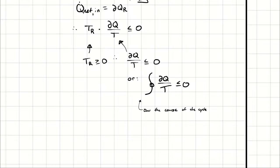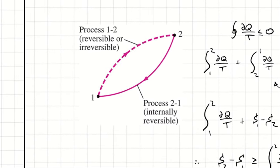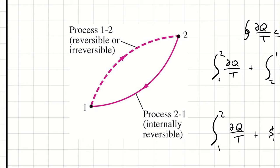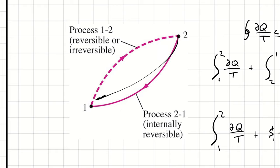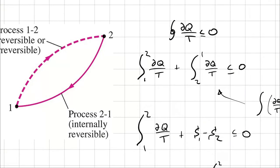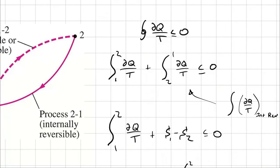If we consider another situation — the easiest cycle possible, two processes — the first process goes from one to two, shown here as a dashed line, and that process could be anything: it could be reversible, it could be irreversible. Then to complete the cycle, we have a process from two to one, shown here as a solid line, which is specifically an internally reversible process. This cycle of two processes must have its cyclic integral of δQ/T less than or equal to zero, and that cyclic integral means the sum of all the integrals across the cycle.